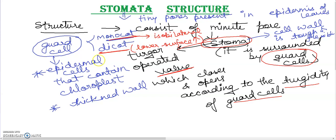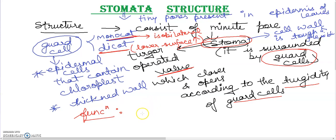Now I want to tell you about some functions of stomata — it is very important. As you all know, water is lost through the stomata. The plant will regulate the degree of stomatal opening to reduce water loss.